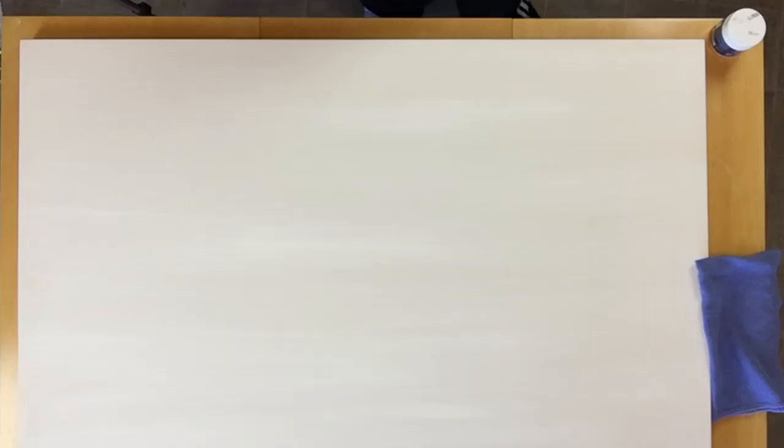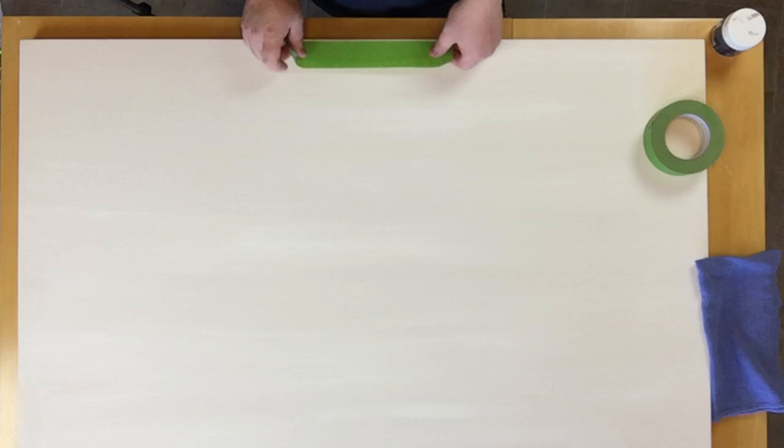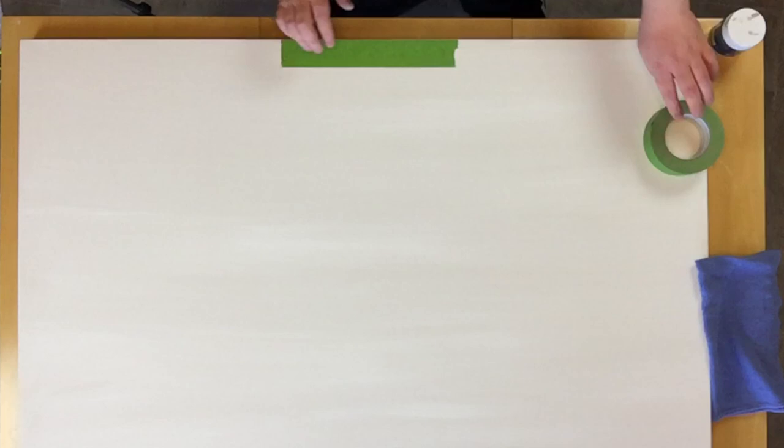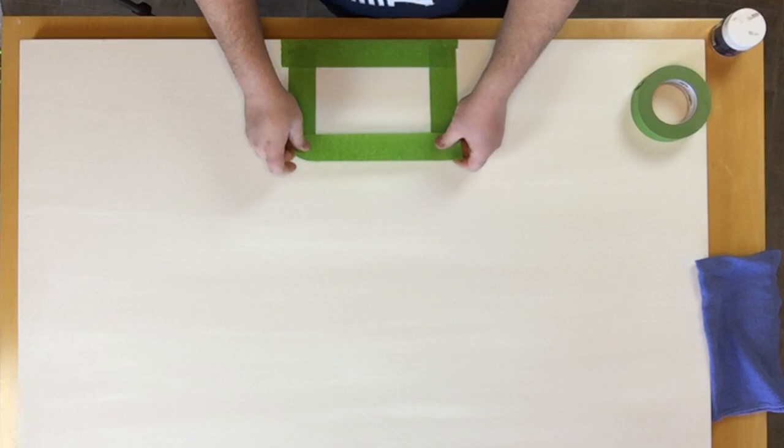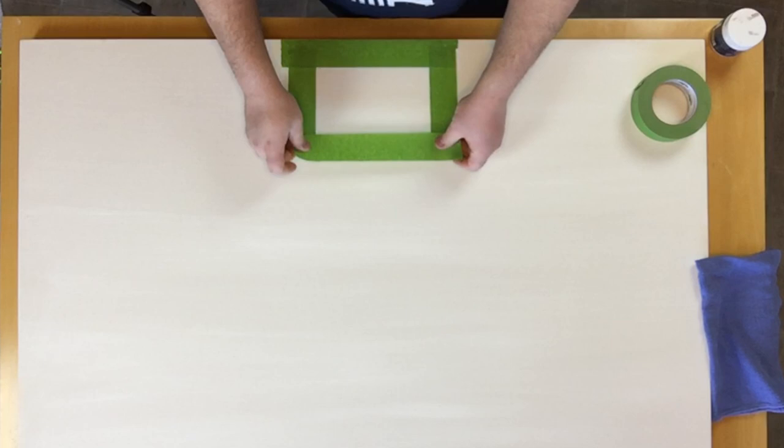I began by using some frog tape to just tape off random sized squares. It doesn't necessarily matter where you place them or how big they are. It's kind of supposed to be random. I like frog tape because it keeps a nice clean edge. Then it was just a matter of repeating square after square after square.